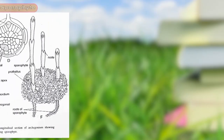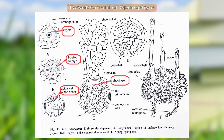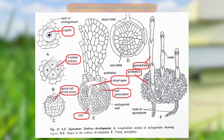After the formation of the antheridia and archegonia, fertilization takes place. A zygote is formed, and the first division of the zygote is a transverse division forming an epibasal cell and a hypobasal cell. Further division produces a quadrant cell structure. The epibasal cell forms the shoot and the hypobasal cells form the root. The shoot apex is formed from the epibasal cell, leaf primordia are formed from the remaining cells, and from the lower portion the root is formed — giving rise to a young sporophyte with proper nodes and internodes.